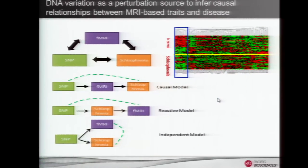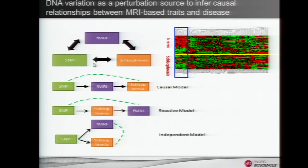Here I'm showing some structural and functional MRI data. This is structural data where I'm looking at schizophrenia. We've looked at many different regions of the brain and many different individuals — some normal, some with schizophrenia — and we see patterns distinguishing between the two states. Since we have a population, we can use DNA variation as a perturbation source to start understanding how these MRI measurements are causally related to schizophrenia.